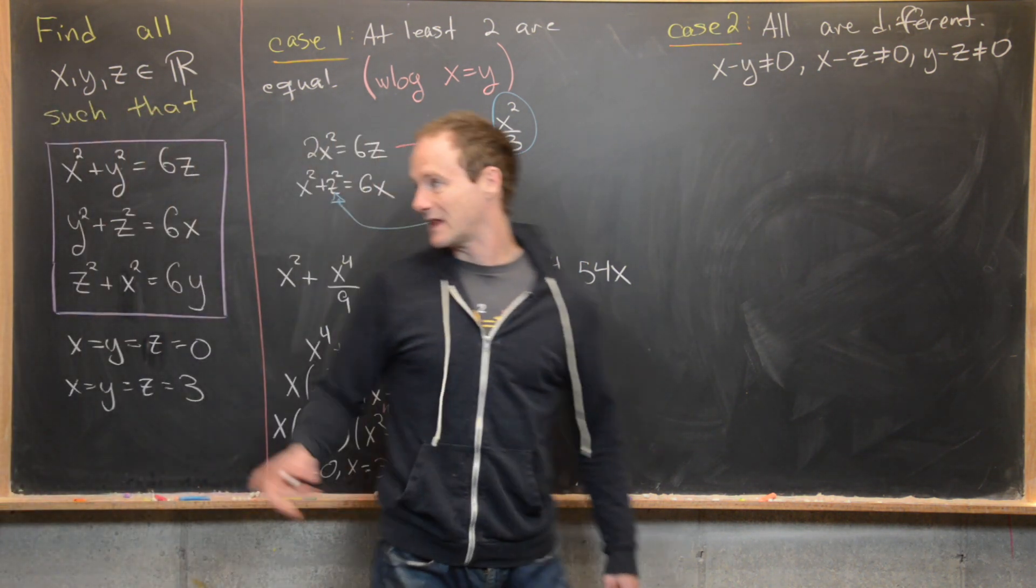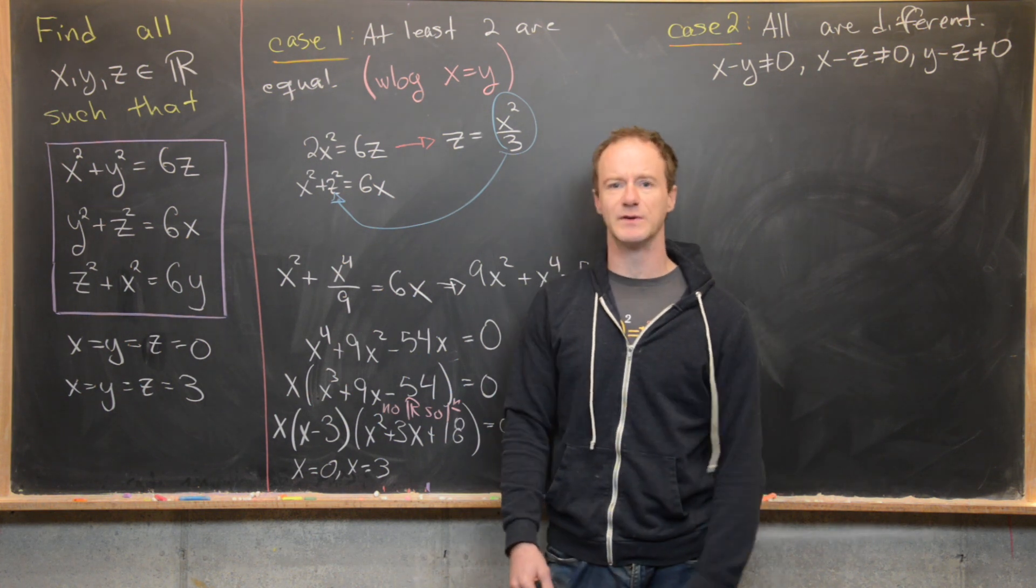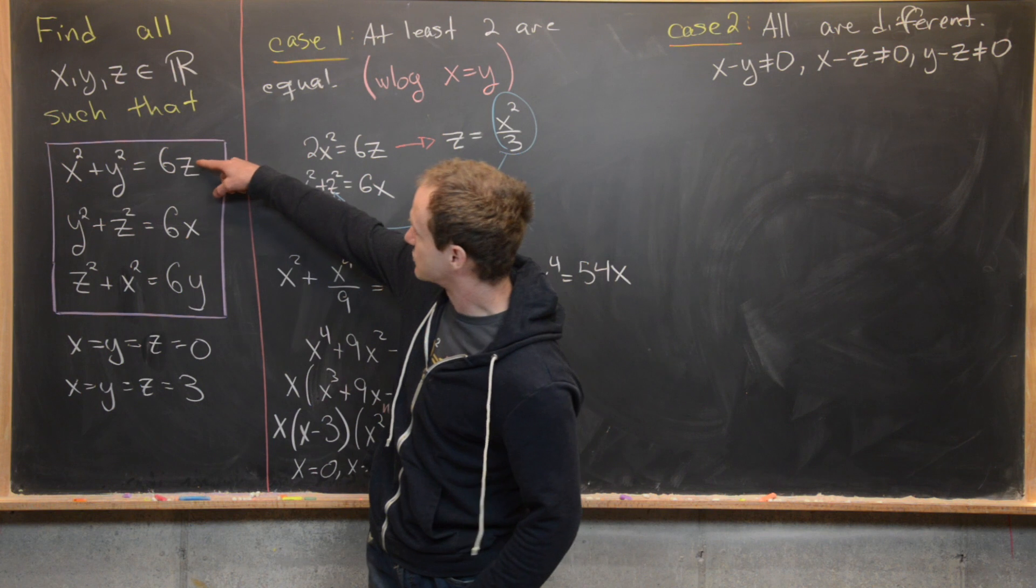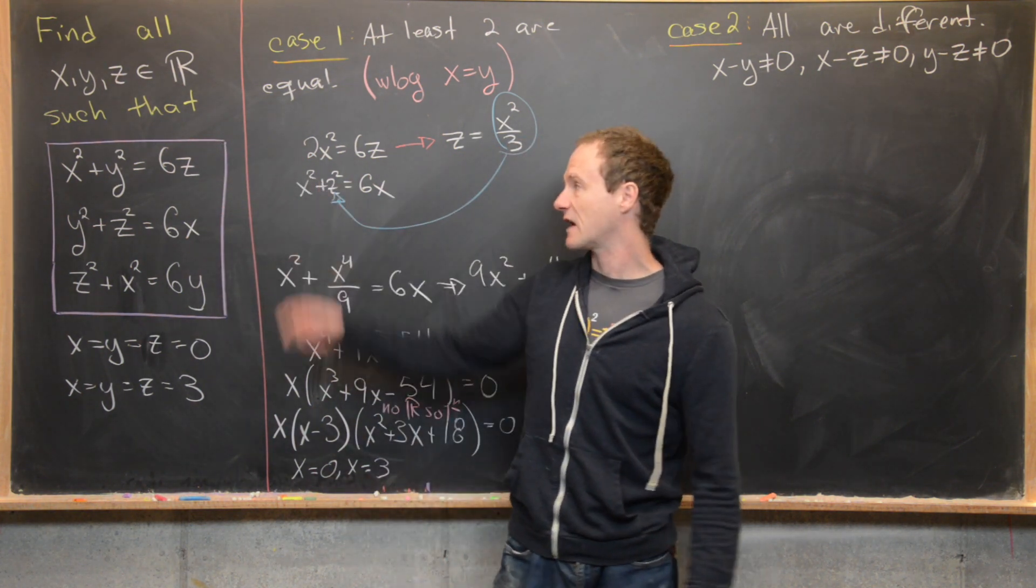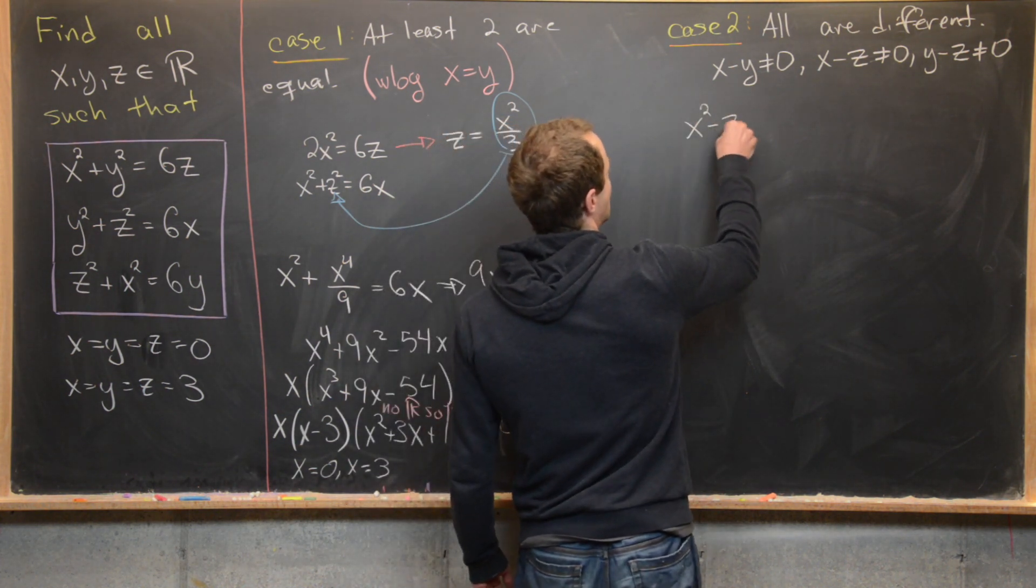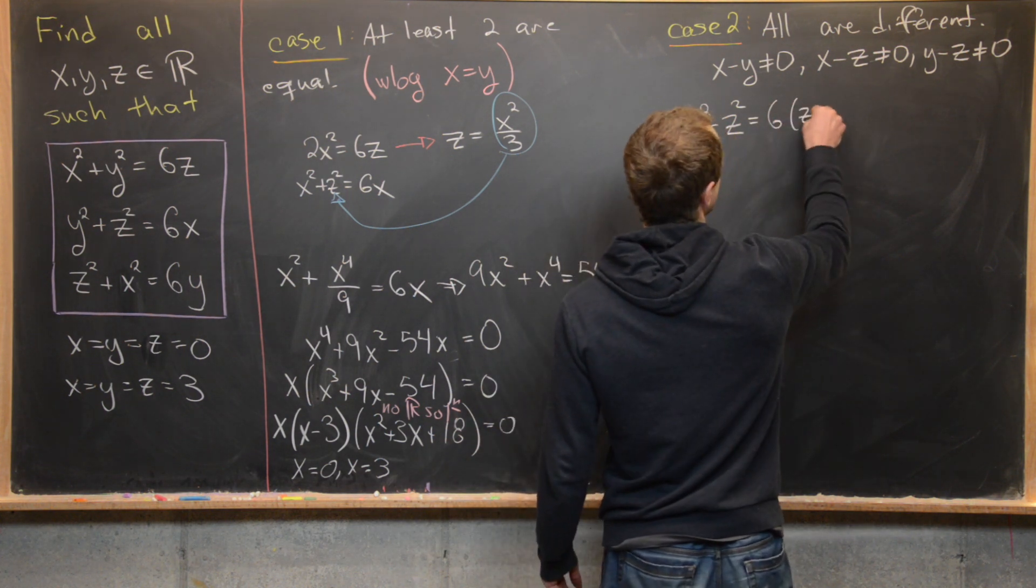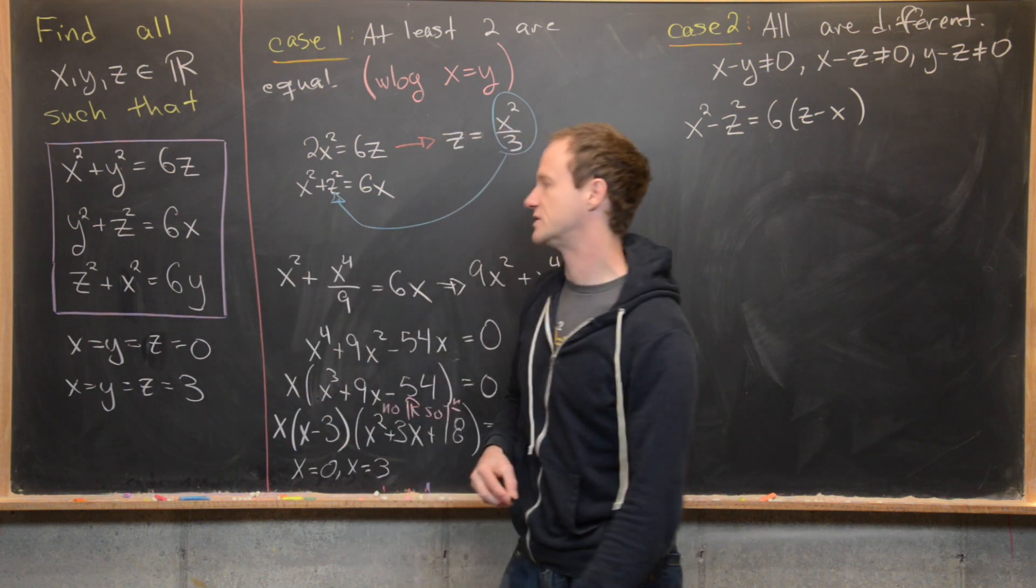So next, what we want to do is take linear combinations of our given equations in order to build a difference of squares type factoring. So notice I can subtract the first equation minus the second equation, that'll cancel out the y². And I'll be left with x² - z² = 6(z - x). Again, we've got equation one minus equation two.